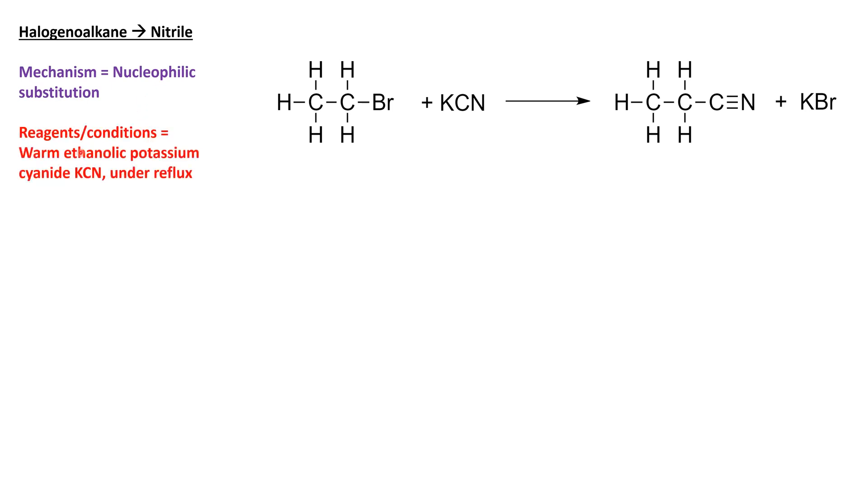We need to use warm ethanolic potassium cyanide. Ethanolic means it's dissolved in ethanol, and this needs to be done under reflux. KCN is the formula of the potassium cyanide.